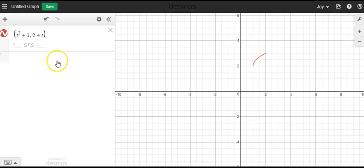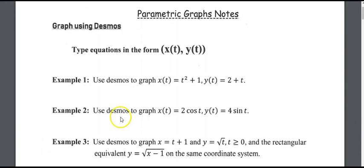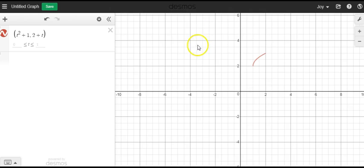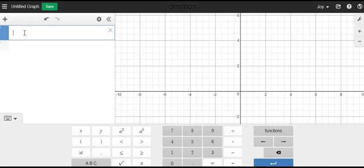We have a second example. It was x of t is 2 cosine t and y of t is 4 sine t. I'm going to do a new one and type in 2 cosine t, comma, and then my y equation is 4 sine t.